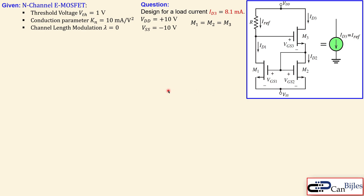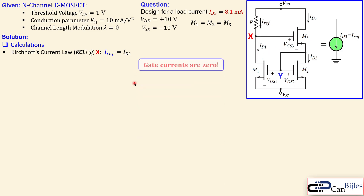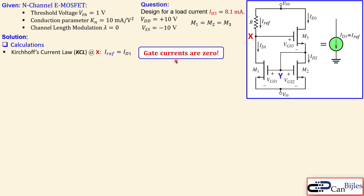Let's see what we need to do to get this load current of 8.1 milliamps. Applying Kirchhoff's current law (KCL) at node X: since the gate currents of all MOSFETs are zero for DC, we can say IRF is simply equal to ID1.